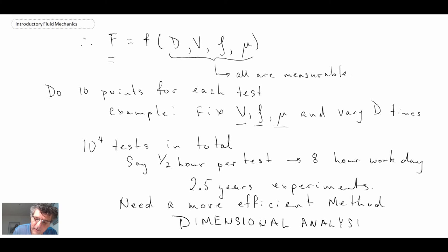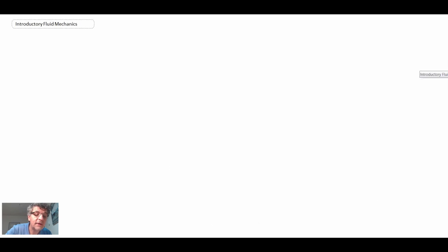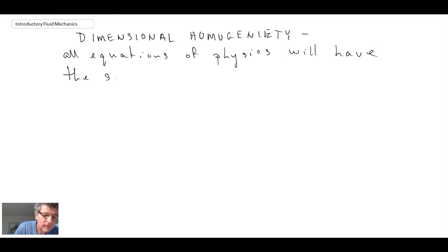We need a more efficient method, and the more efficient method that we will look at is dimensional analysis. And what dimensional analysis is going to rely on is a thing called dimensional homogeneity. And what that says, and we'll be using it as we go through dimensional analysis.